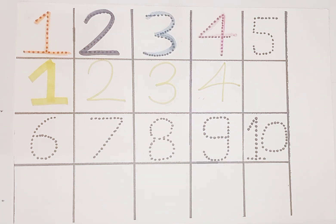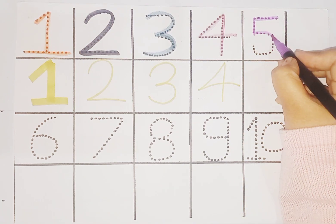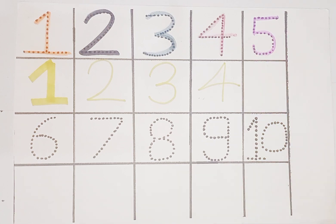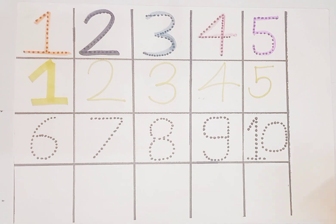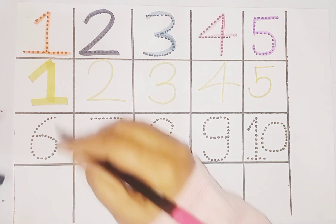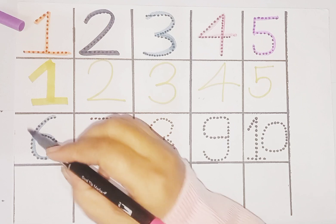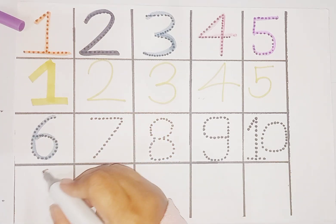Next is number 5. This is number 5 and number 5 is here. Next is number 6. This is number 6. 6 is here.